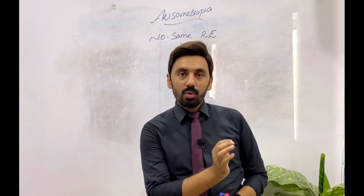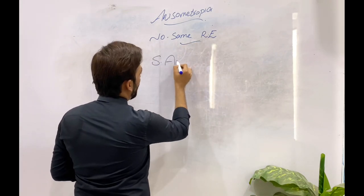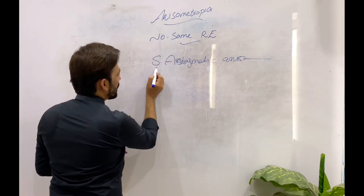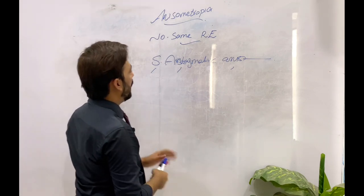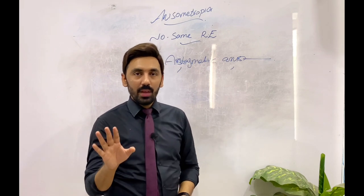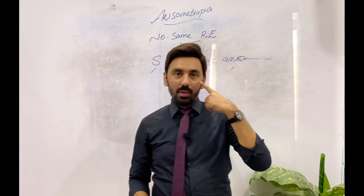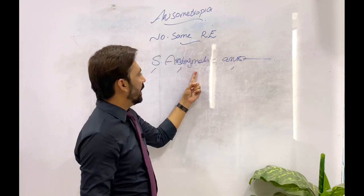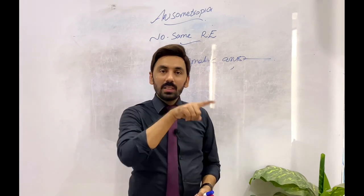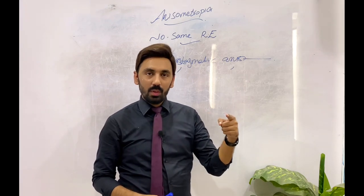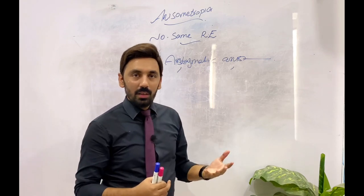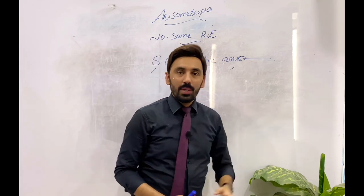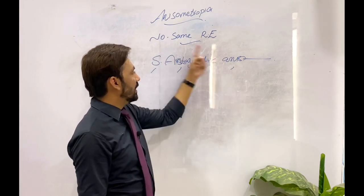The next type is simple astigmatic anisometropia. In simple astigmatic anisometropia, one eye is totally normal with no refractive error, and the other eye has a cylindrical number. If the other eye has a minus cylinder, it is simple myopic astigmatic anisometropia. If one eye is normal and the other has a plus cylindrical prescription, it is simple hyperopic astigmatic anisometropia. The difference in refraction is in cylindrical form.